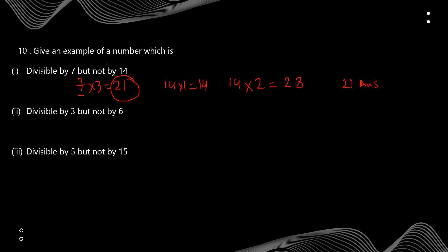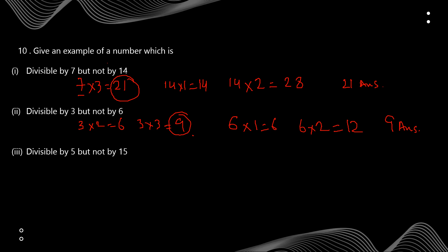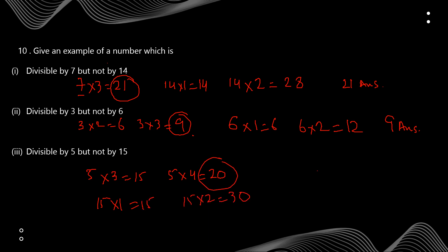Next: divisible by 3 but not by 6. From the table of 3: 3×2=6, 3×3=9. For 6: 6×1=6, 6×2=12. So 9 is divisible by 3 but not by 6 — that's our answer. Similarly for 5 and 15: 5×4=20, and 20 is divisible by 5 but not by 15. So 20 can also be an answer.